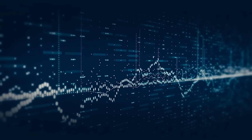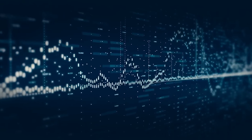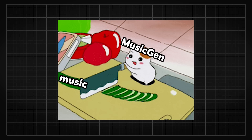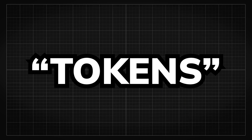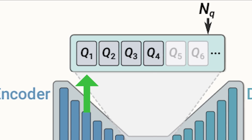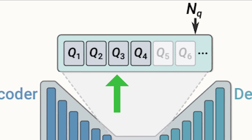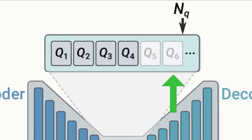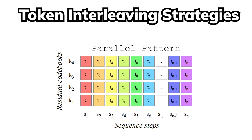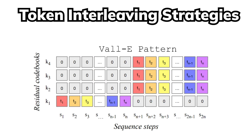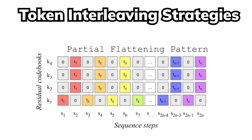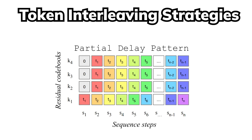Music is a continuous flow of sound, which can be hard to work with directly, especially for a computer model. What MusicGen does is break down this continuous flow into a series of discrete chunks or tokens using a process called RVQ. Each of these tokens represents a small piece of the music, achieving a compressed and discrete music representation that can be processed more efficiently. These tokens are then combined with the language model through a strategy called token interleaving, allowing MusicGen to generate high-quality music samples conditioned on textual descriptions or melodic features, providing better control over the generated output.